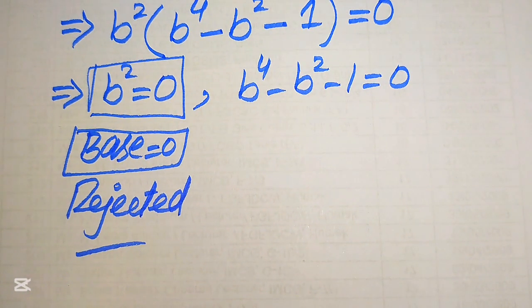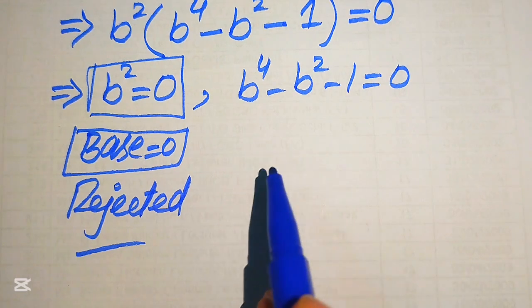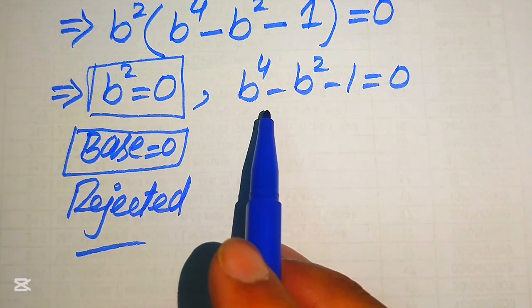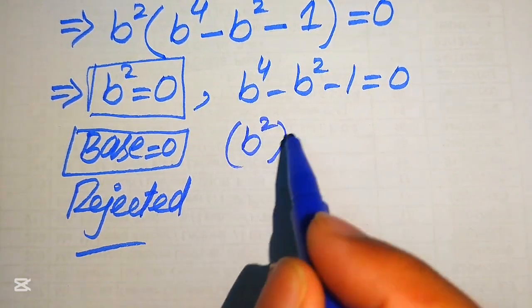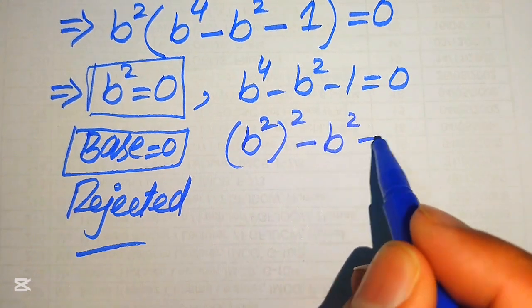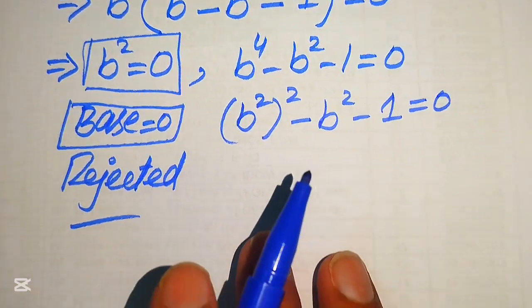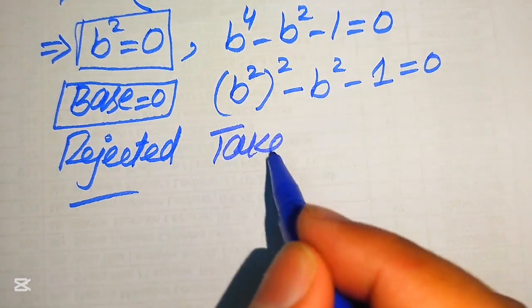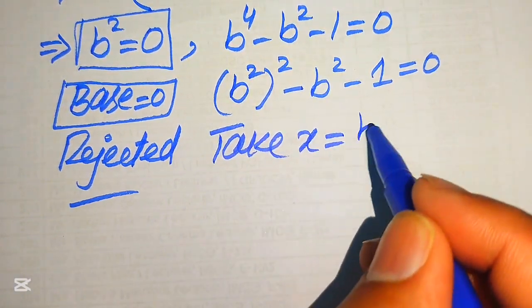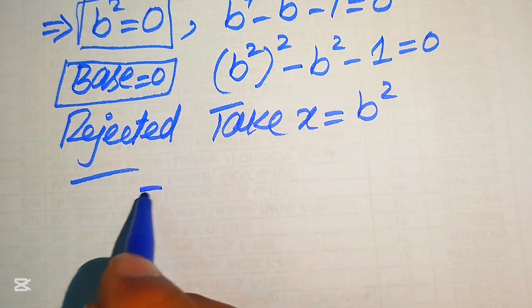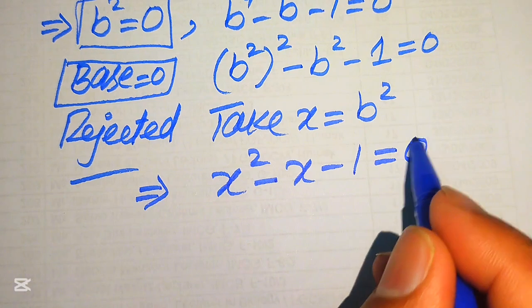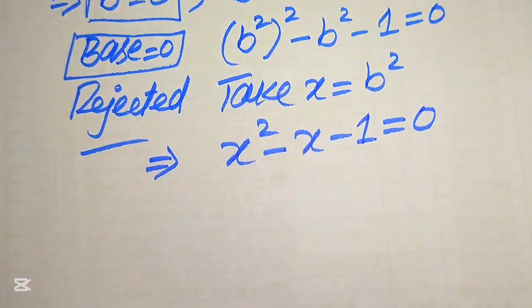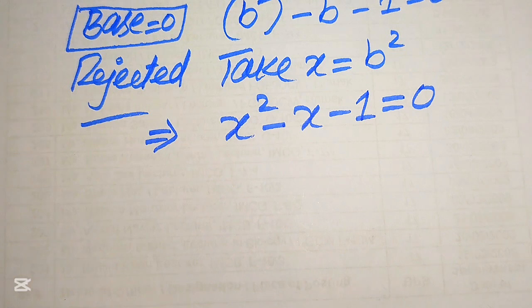To solve the remaining equation b⁴ − b² − 1 = 0, we rewrite b⁴ as (b²)² and substitute x = b², giving us the quadratic equation x² − x − 1 = 0.